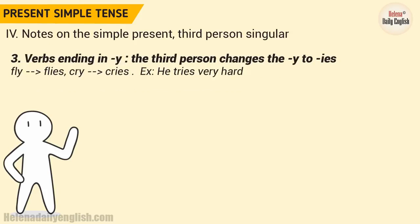3. Verbs ending in -Y: the third person changes the Y to -IES. Fly → flies, cry → cries. Example: He tries very hard.